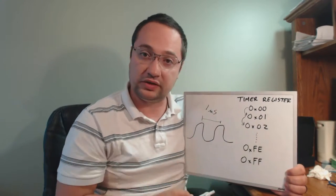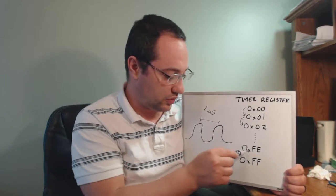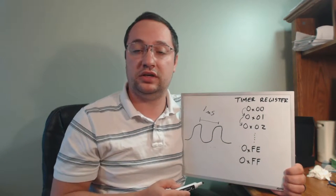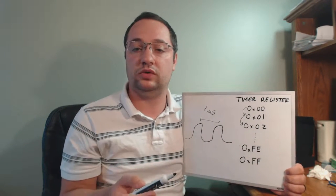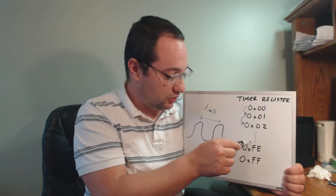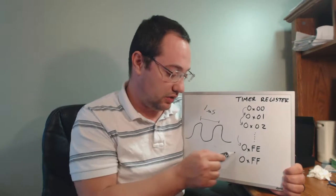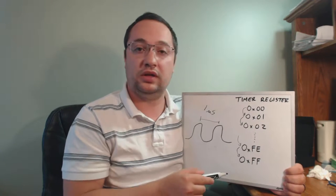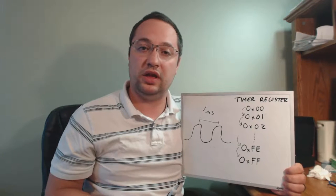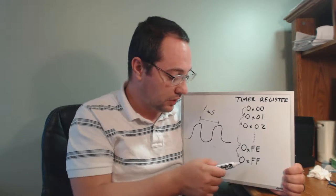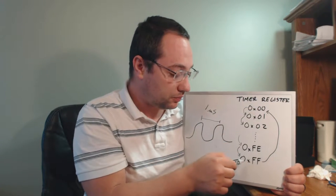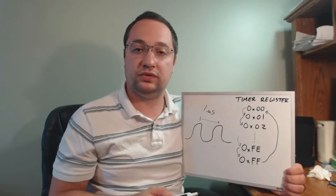So every time the timer sees a pulse, it will increment the timer register. You start off at zero, and you see a pulse, and you go to one. You see another pulse, and you go to two. And this continues up until you completely fill the number. So these are in hexadecimal. The 0x means that they're in hexadecimal. And this is actually often how they're represented in a datasheet. They will use hex, they won't use decimal numbers.